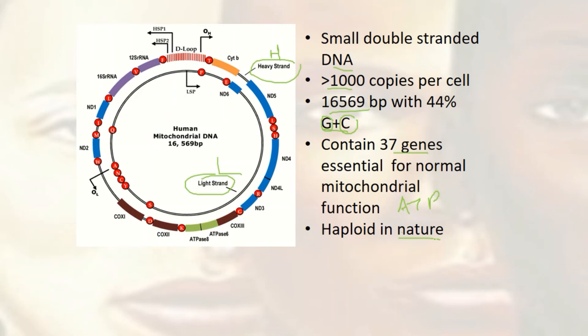We also have what we call a D loop, and here you can see the structure of the mitochondrial DNA and the genes of this mitochondrial DNA.